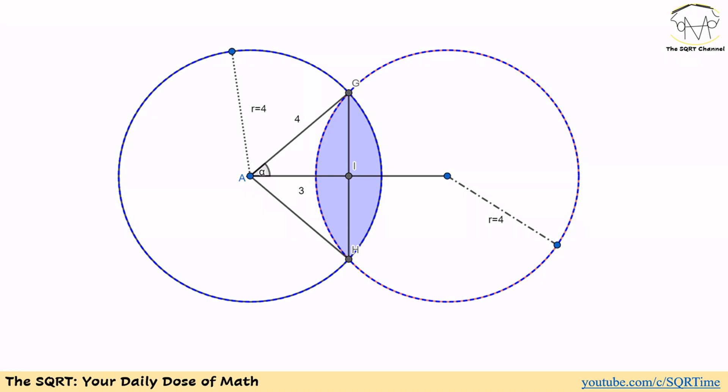In this triangle, AG is the radius of the circle, so AG equals 4. The distance between the centers of the two circles is 6, and since the circles are identical, the line connecting the two centers divides GH into two equal parts. Also, GH divides the line between the two centers into two equal parts. If I is the intersection of GH and the line connecting the two centers, then AI equals 3.